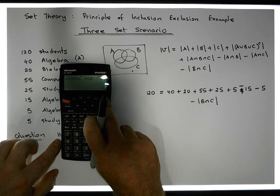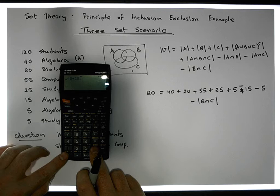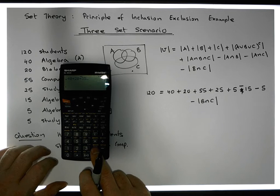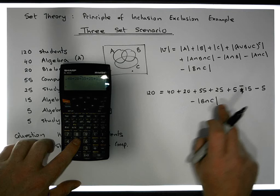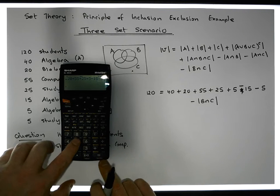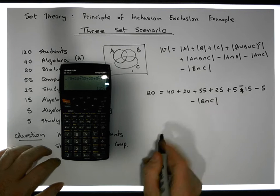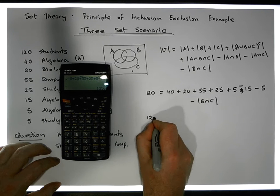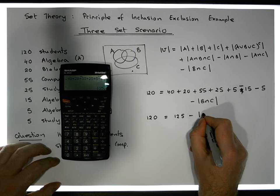The numbers on the right hand side here, so we have 40 plus 20 plus 55 plus 25 plus 5 minus 15 minus 5. In total we have 125 in total here. So now what we have is 120 must be equal to 125 minus how many people there is that studies biology and computing.